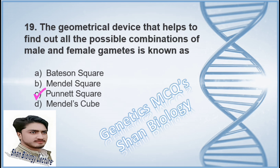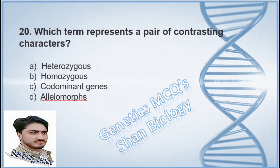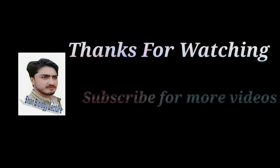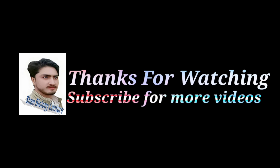The correct option is C, Punnett square. Question 20: Which term represents a pair of contrasting characters? Option A heterozygous, option B homozygous, option C co-dominant gene, option D allelomorph. The correct option is D, allelomorph. Thanks for watching — subscribe for more videos on Sean Biology.